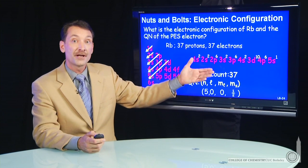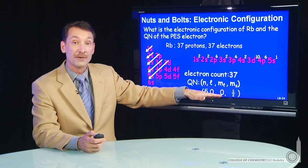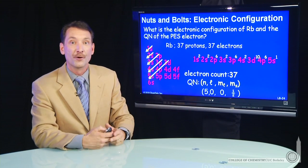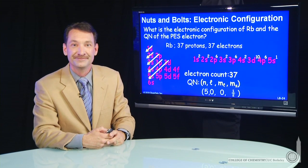So there are our electronic configuration and our quantum numbers for the outermost electron for rubidium atoms.